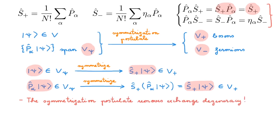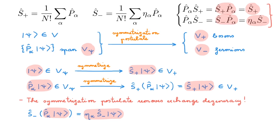We can make a similar argument by applying the antisymmetrizer on a permutation of Psi. Remember that S_minus P_alpha equals eta_alpha S_minus. We again find that any permutation of a ket Psi antisymmetrizes to the same state, in this case up to a minus sign. This means that we also remove exchange degeneracy for fermions using the symmetrization postulate. Overall, of all the permutations of a state in V, we have a single state in the symmetric and antisymmetric spaces V_plus and V_minus. The ket that describes a physical state for bosons is S_plus Psi, and for fermions it is S_minus Psi.